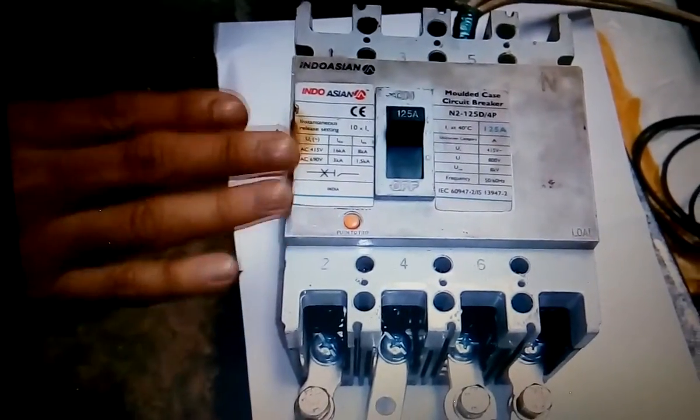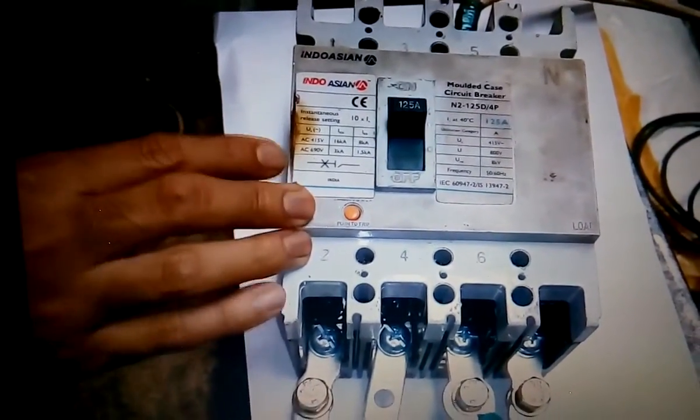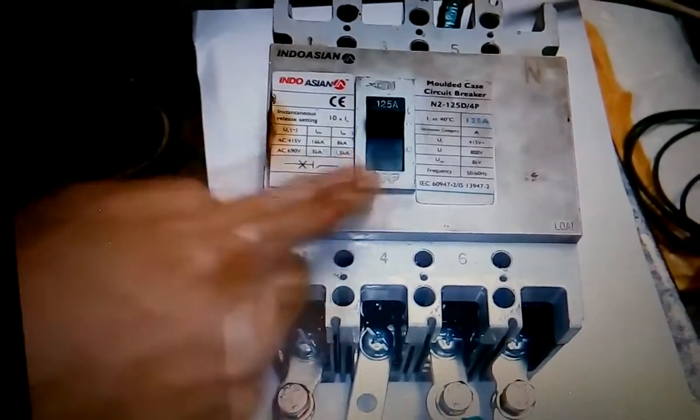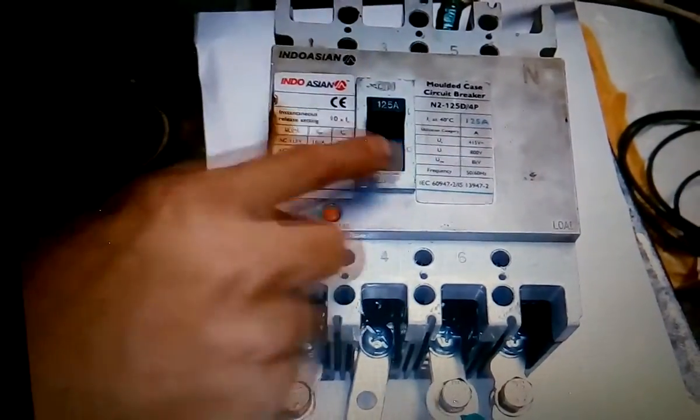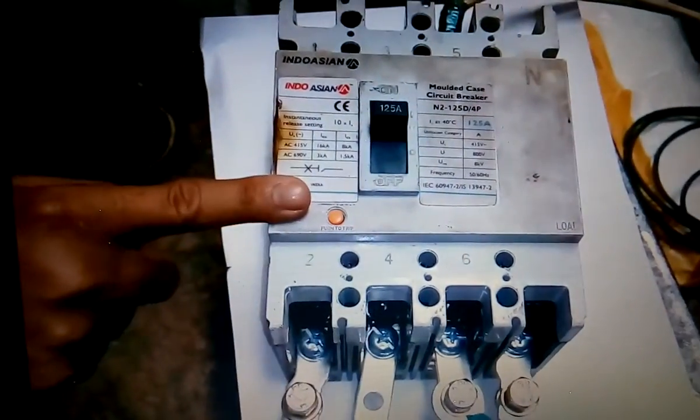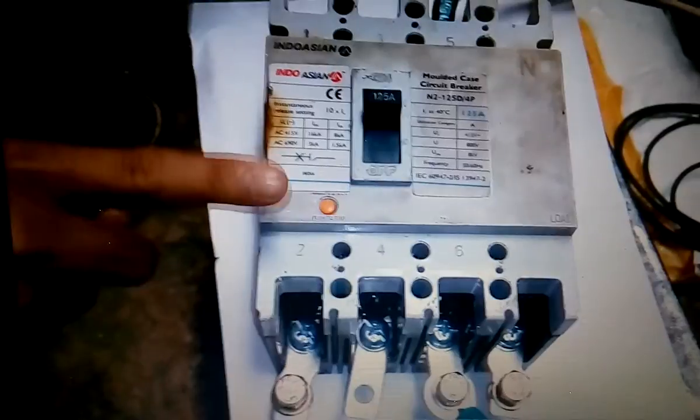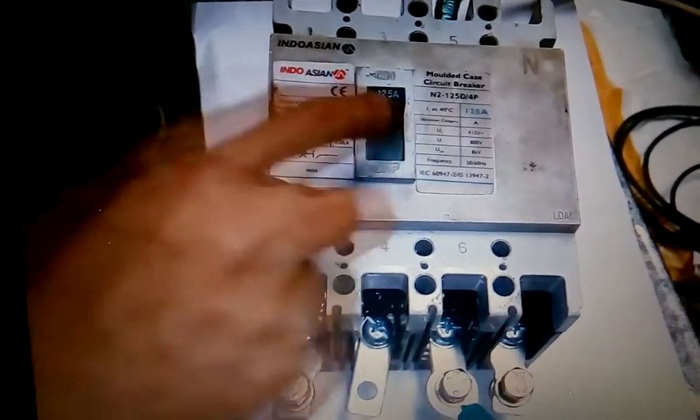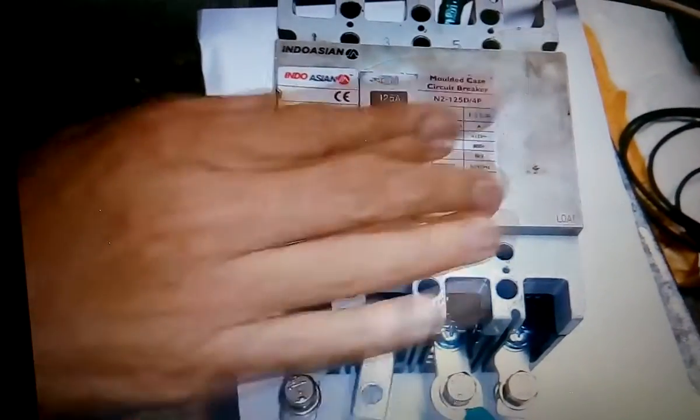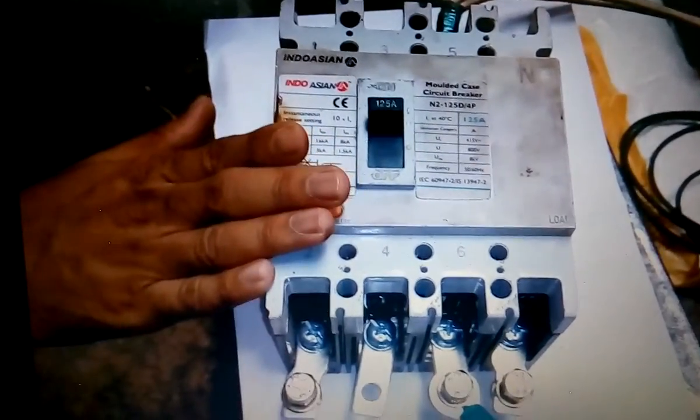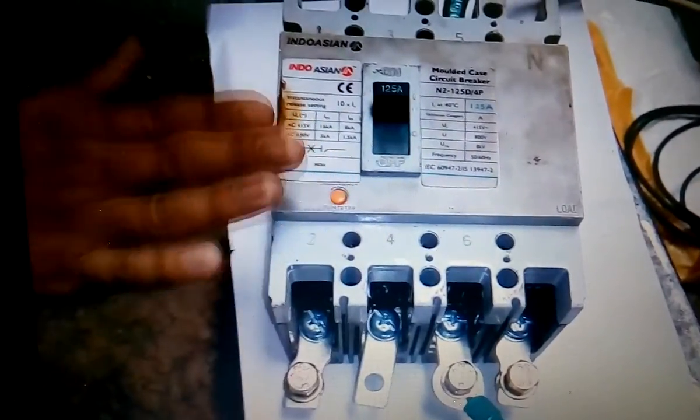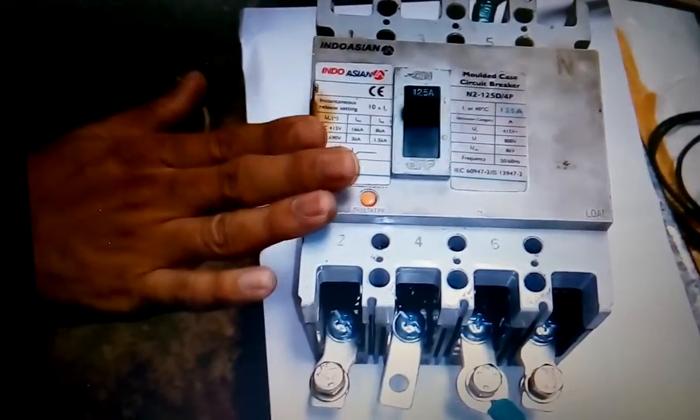This is a typical thermal magnetic release MCCB. Here you can see the complete details of the breaker: molded case circuit breaker NT2, Endo-Asian make, and this is a fixed type overload threshold MCCB.